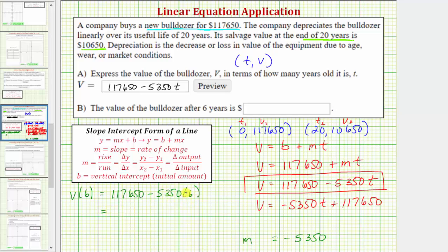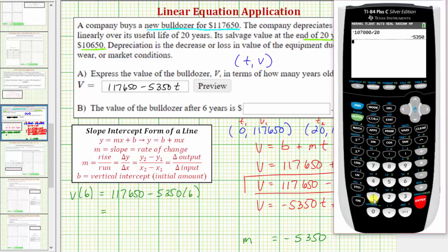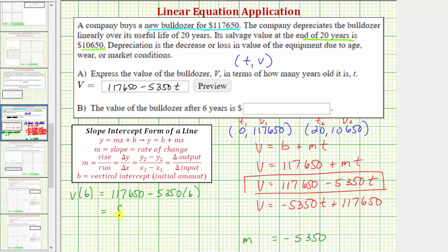Let's go back to the calculator to find this value. After six years, the value is $85,550. Notice how the units of dollars is already here, so we only enter 85,550. I hope you found this helpful.